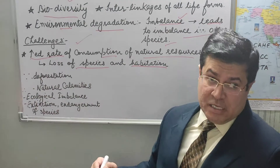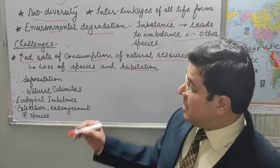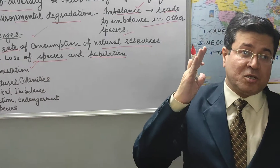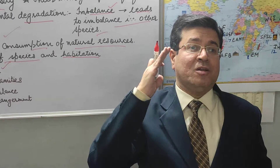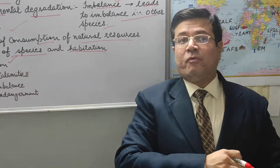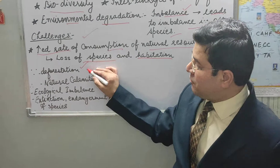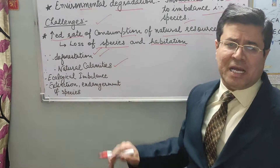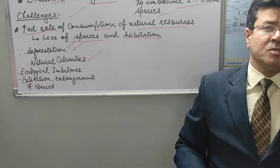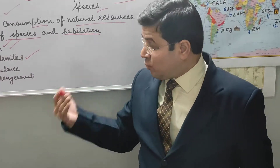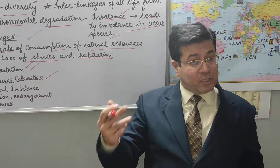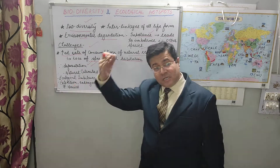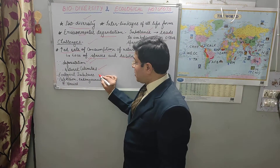That is very simple to understand. Deforestation is going on because of urbanization, because of expansion of industries, because of expansion of agricultural areas — for so many reasons we are clearing forest. At the same time, some natural calamities are also there. Sometimes floods, sometimes earthquakes, sometimes cyclones — they are also responsible for the loss of biodiversity. And what is the result of all this? Ecological imbalance.